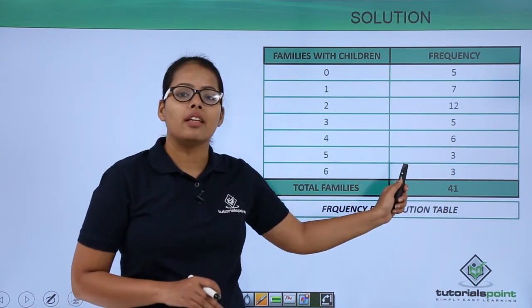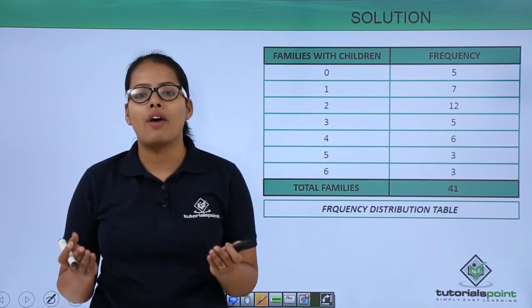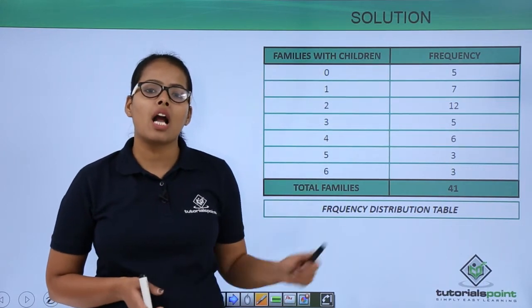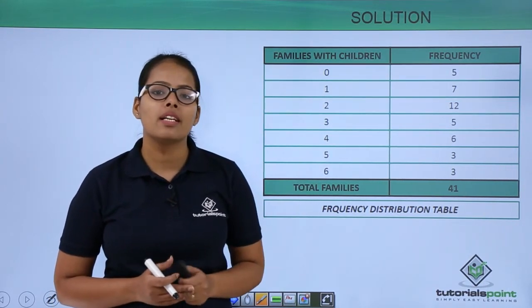So this frequency is actually the number of families with the given number of children. Now you must be wondering how did you find out these families? Let's see.